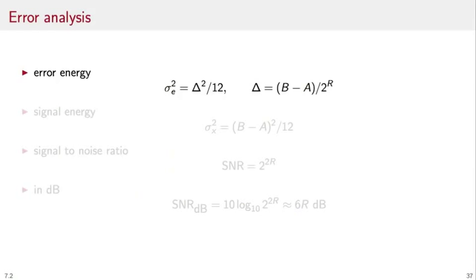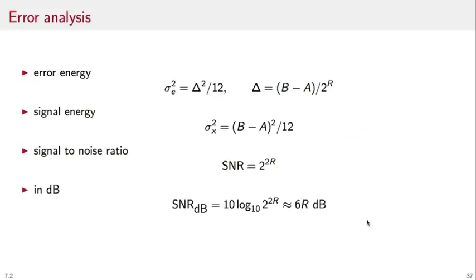If we analyze the error a little bit further, we can relate the expression of the error to the expression for the signal's energy. Since we assume that the input is uniformly distributed, we can compute its variance, i.e. its energy, as b minus a squared over 12. And so we can compute the signal-to-noise ratio as the power of the signal divided by the power of the error. And the signal-to-noise ratio happens to be 2 to the 2r. So if the input is uniformly distributed, and the quantizer is a uniform quantizer, which means it's matched to the input, the signal-to-noise ratio is only a function of the number of bits per sample that we allocate. We can express this result in decibels by taking 10 times the log in base 10 of 2 to the power of 2r. And we get the famous and handy formula of 6 dB per bit.